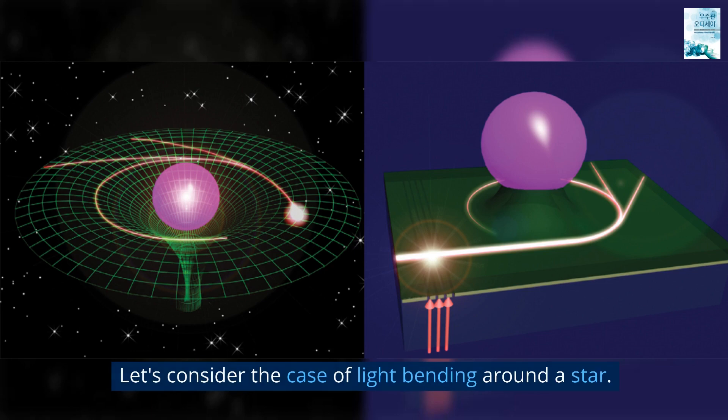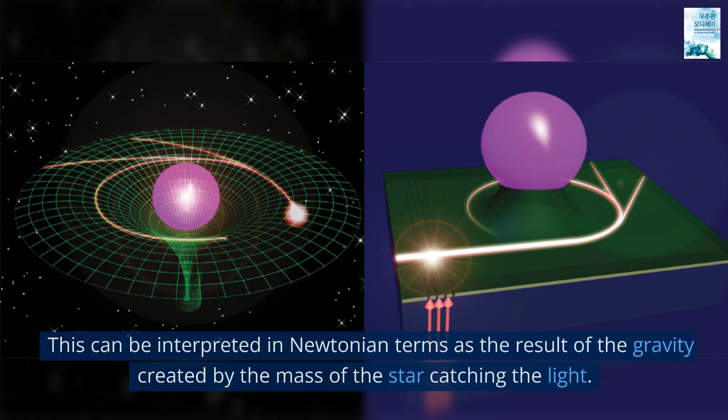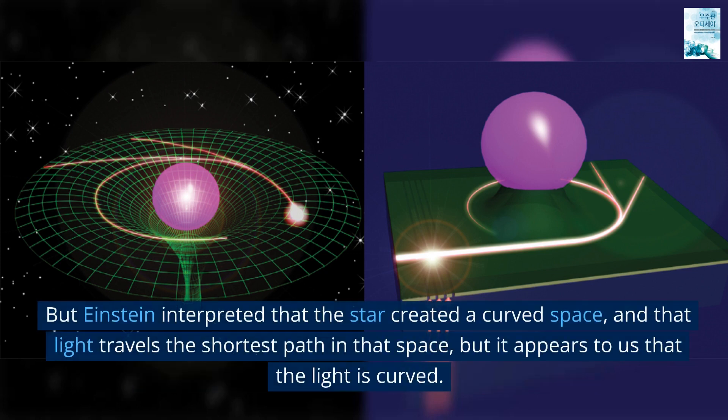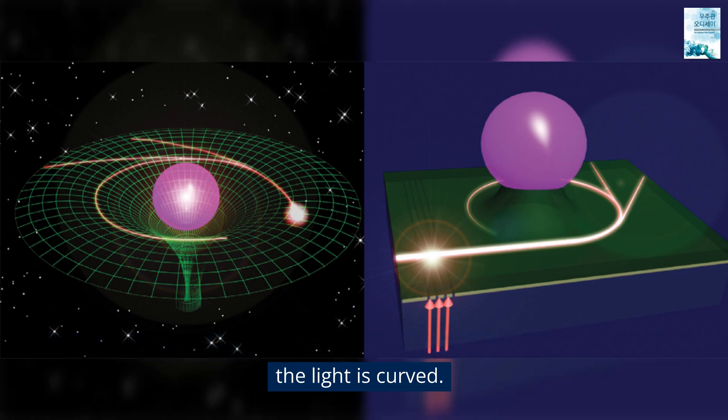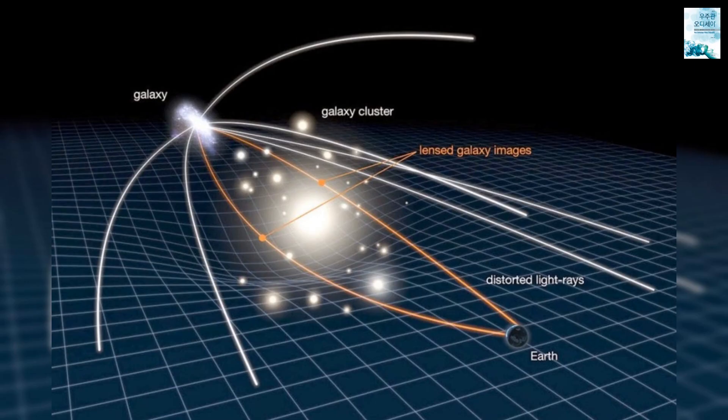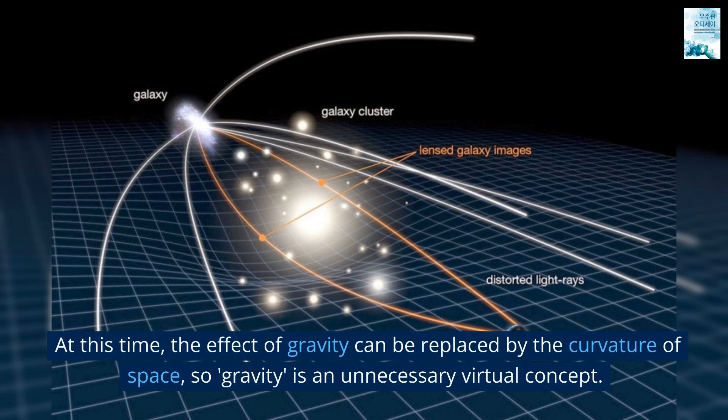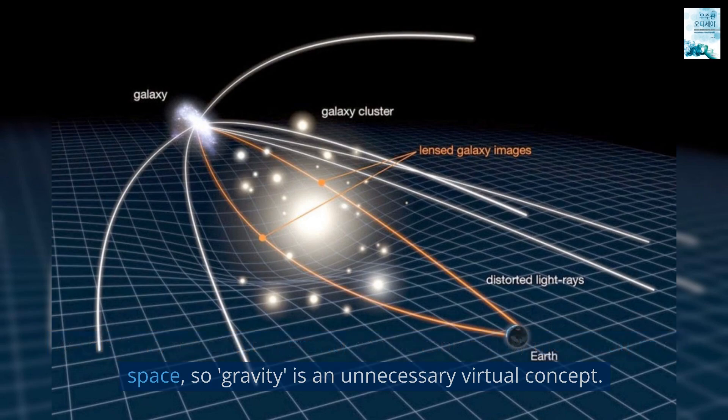Let's consider the case of light bending around a star. This can be interpreted in Newtonian terms as the result of the gravity created by the mass of the star catching the light. But Einstein interpreted that the star created a curved space, and that light travels the shortest path in that space. But it appears to us that the light is curved. Light always travels along the shortest path, geodesic, in space. At this time, the effect of gravity can be replaced by the curvature of space. So gravity is an unnecessary virtual concept.